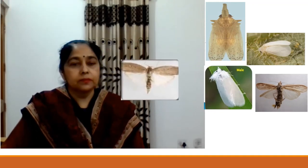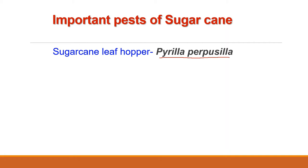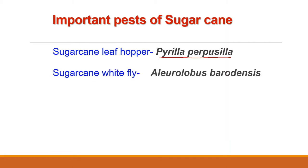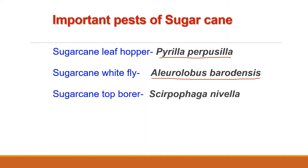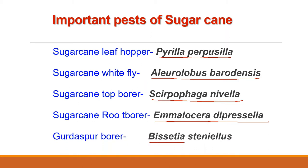The important pests of sugarcane — botanical name Saccharum officinarum — are: sugarcane leafhopper, zoological name Pyrilla purpucilla; sugarcane whitefly, Allurolobus barodensis; sugarcane top borer, Scyrpophaga nivella; sugarcane root borer, Ramellocera deprescella; and Gurdaspur borer, Bicetia stanilis.